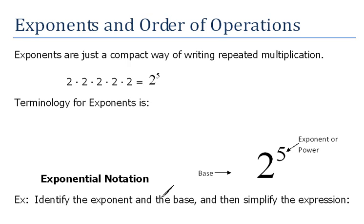Exponents are just a compact way of writing repeated multiplication. For instance, here we have this multiplication problem where we're multiplying 2 to itself 5 times. So the way that we would write that compactly is 2 raised to the 5th power.